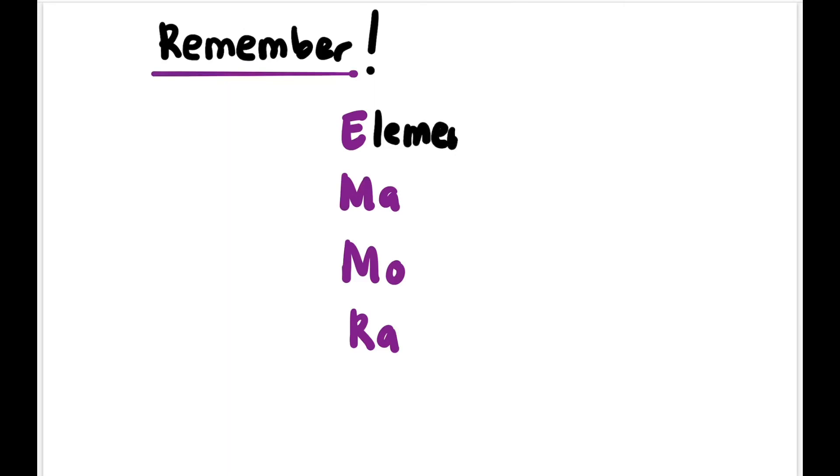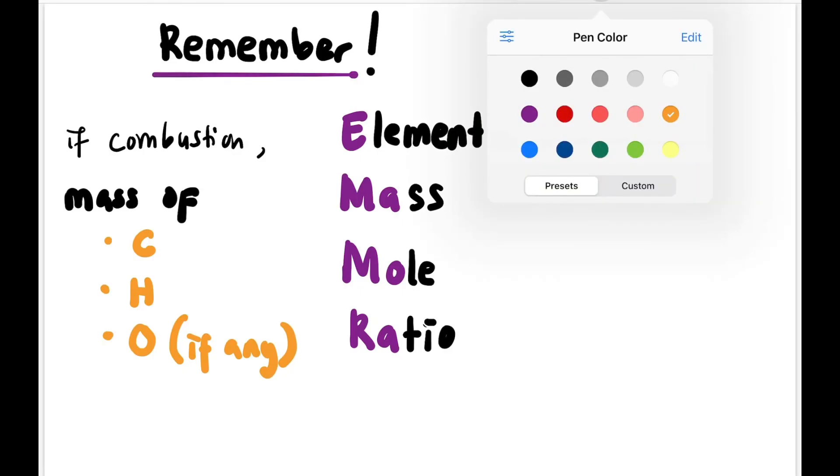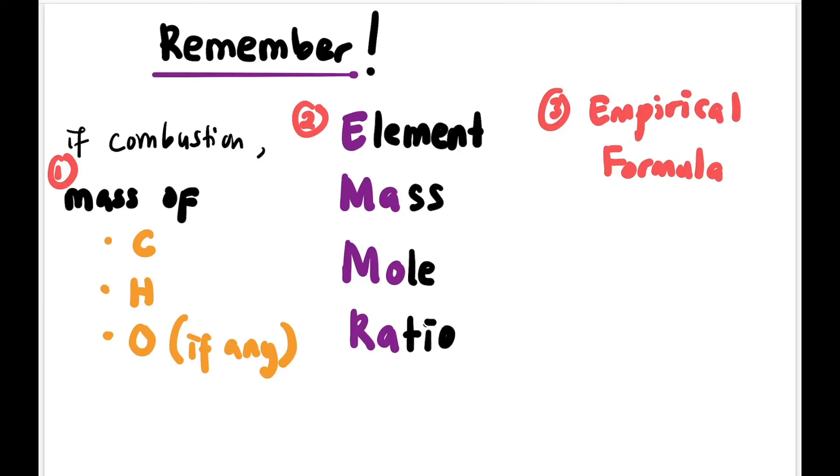Remember, EMAMORA is the key: element, mass, mole, and ratio. But in the case of combustion of a compound, we must start by finding the mass of carbon, mass of hydrogen, and mass of oxygen if present. Find these three first, that's your first step. Then make the EMAMORA table, and then you can calculate the empirical formula. If the question asks about molecular formula, your last step is to find molecular formula. Remember the relationship: molecular formula equals empirical formula times n.